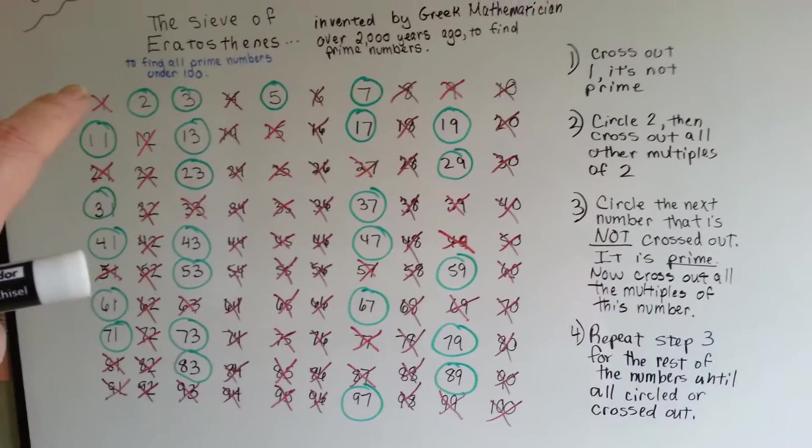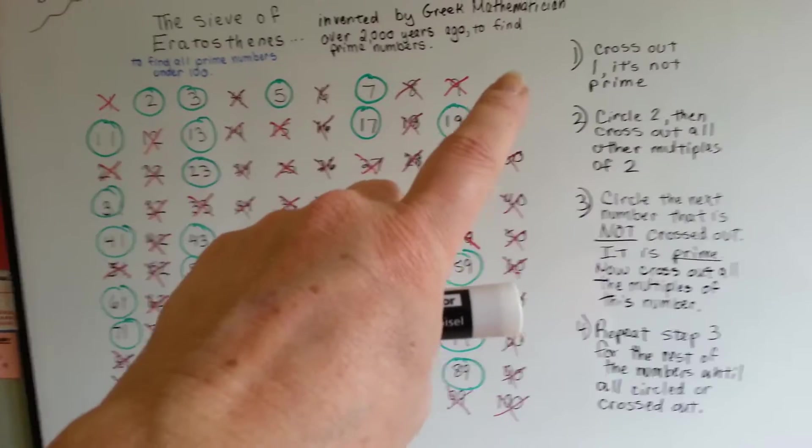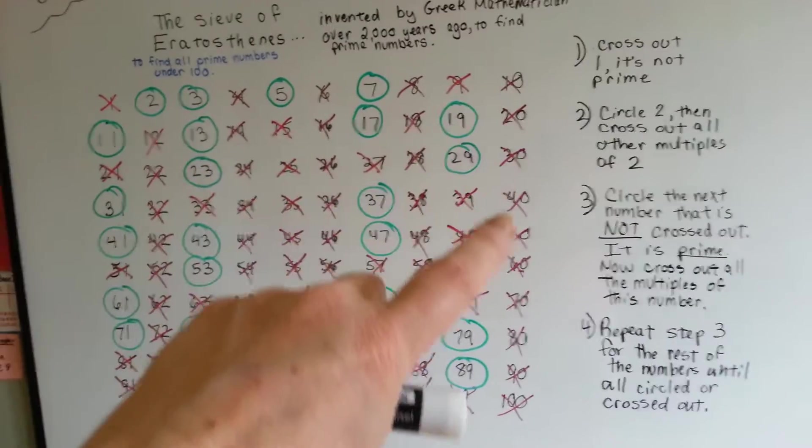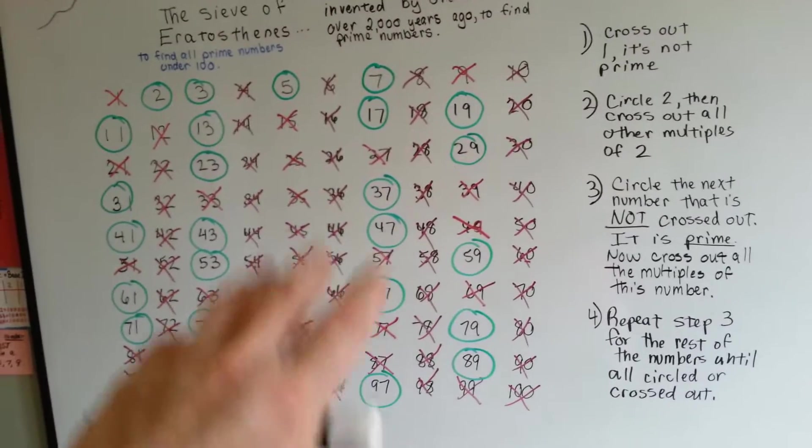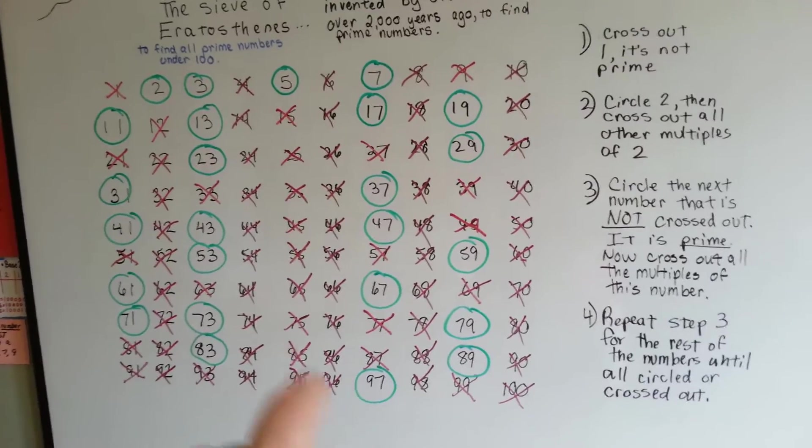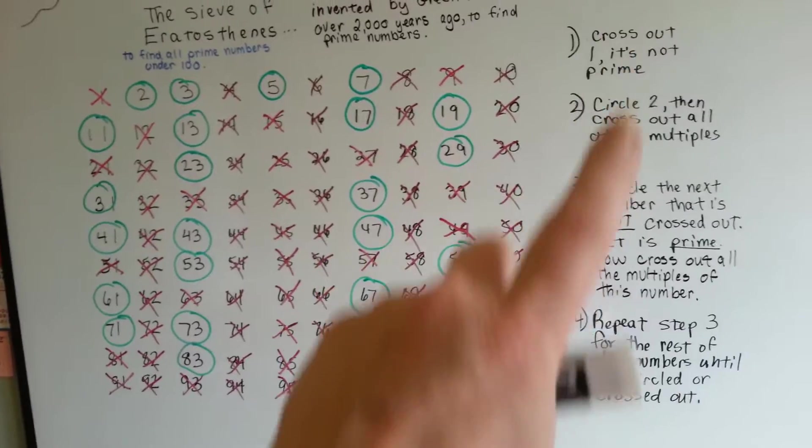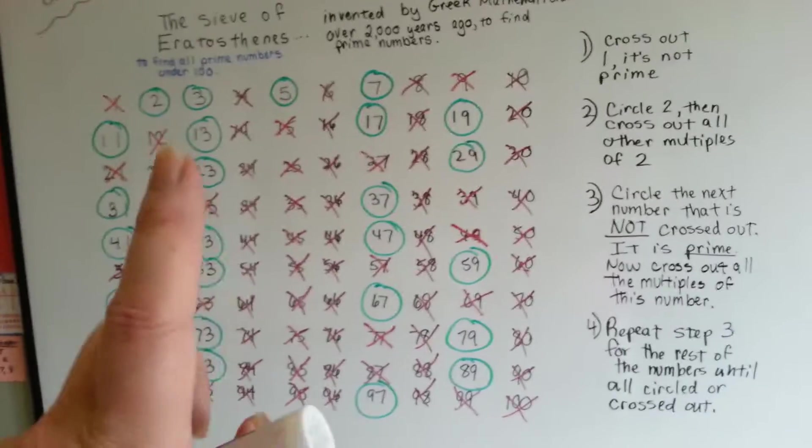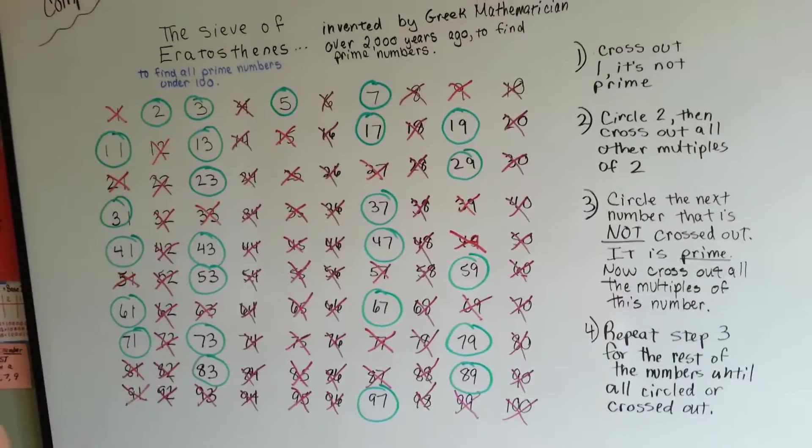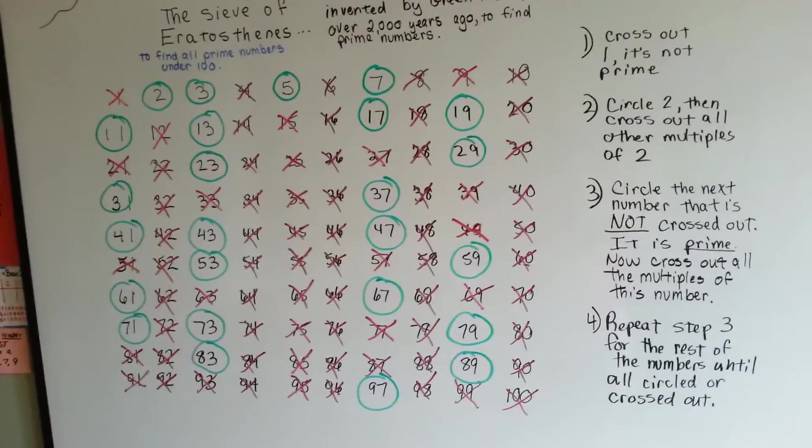then start with 1 and go across to 10, and then get all the multiples of 10 coming down like that, and then all the other numbers coming down, so that you've got 1 up here in this corner and 100 down in this corner. Then follow these steps, and you will find all the prime numbers that are under 100.